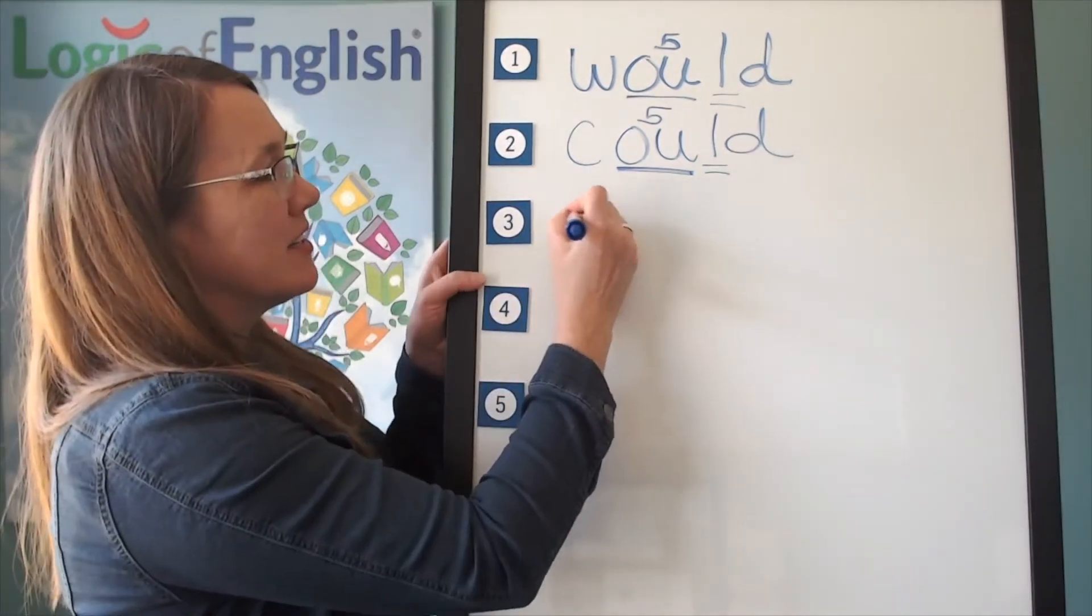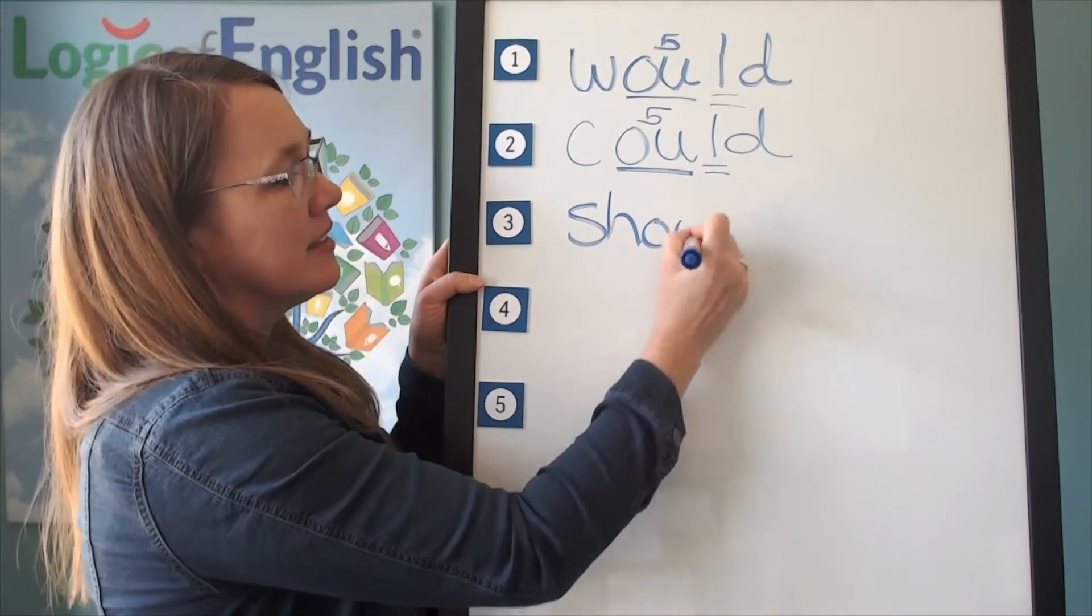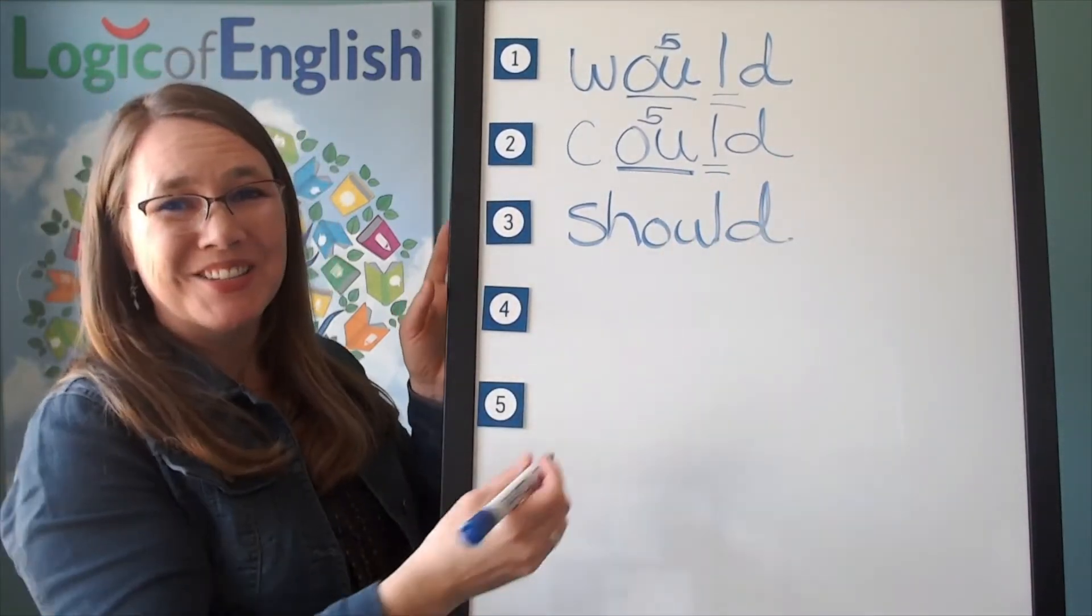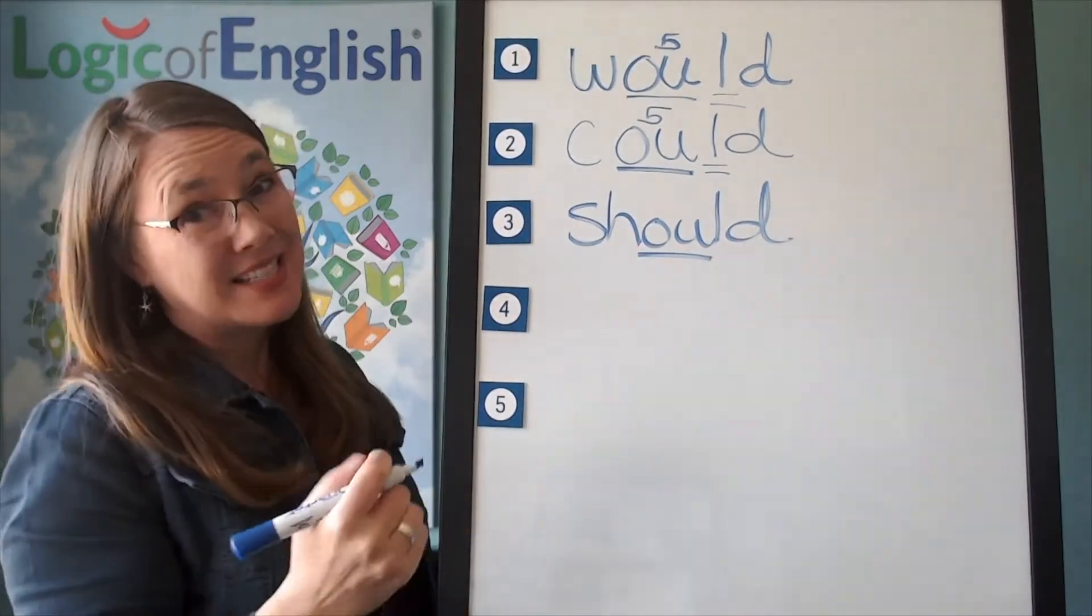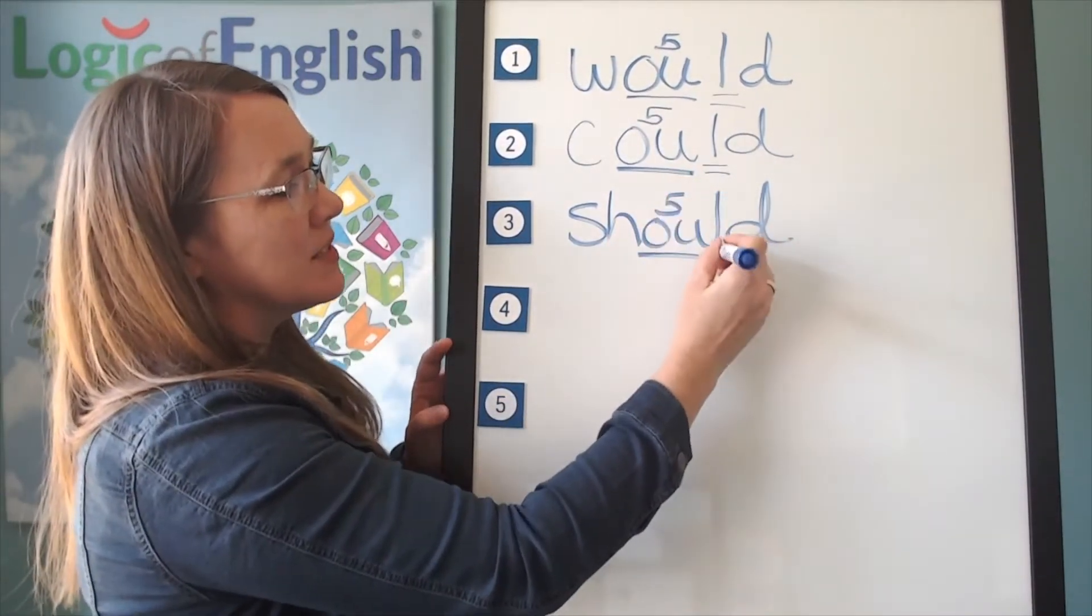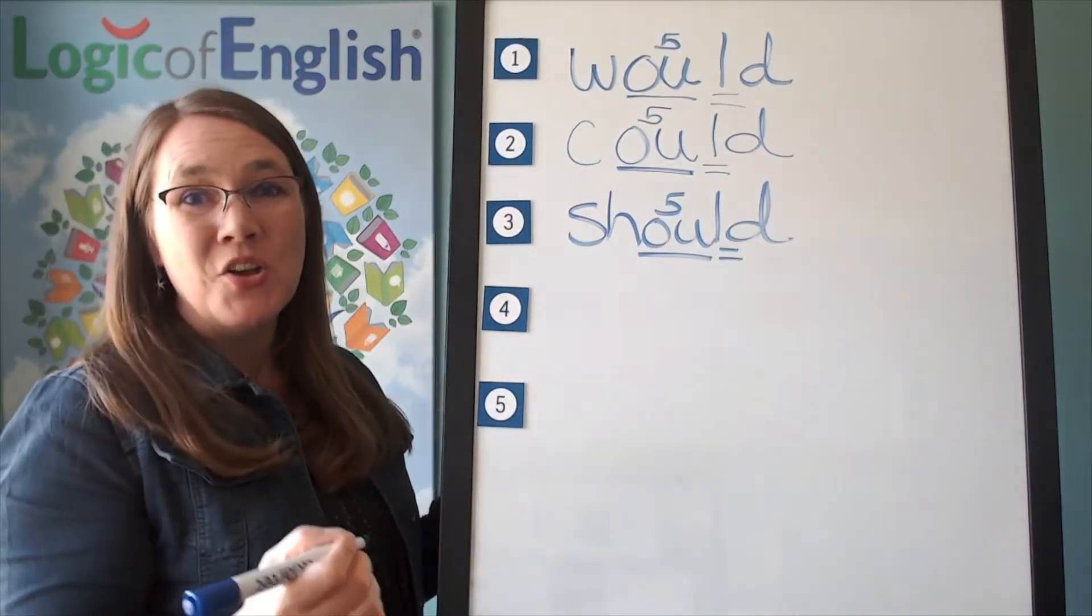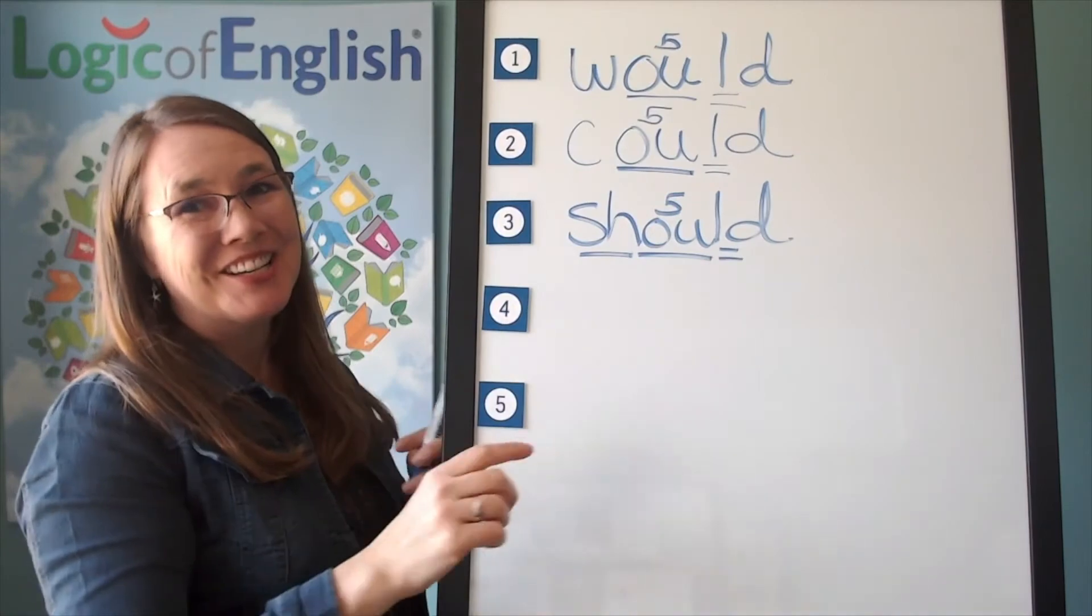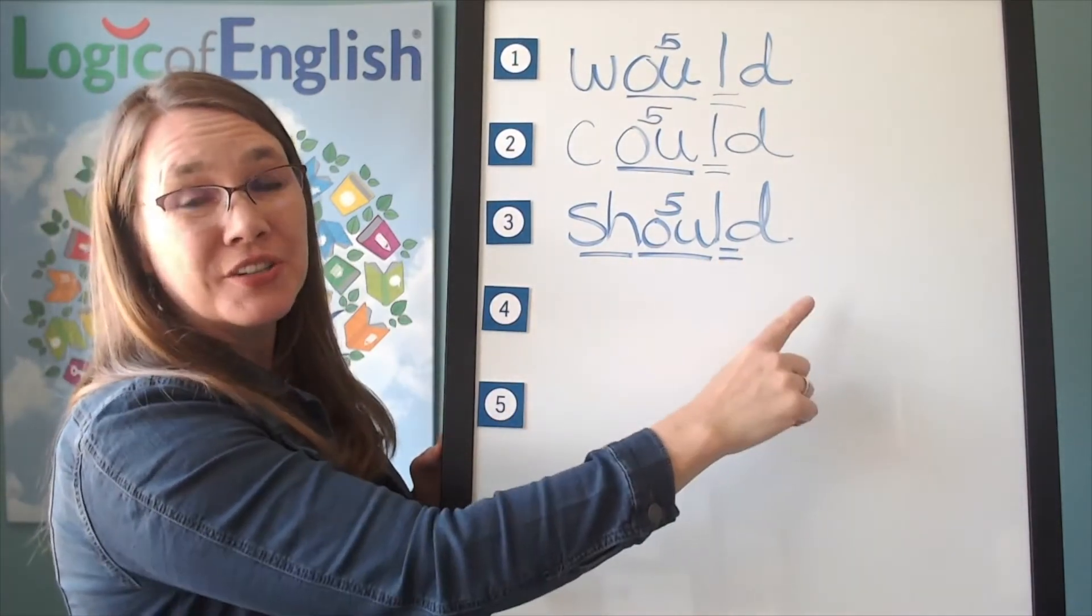Good job. Now help me write it. Should. Sh. Uh. Silent L. Duh. How will we mark it? Well, underline the uh. What sound of ow, o, oo, uh, uh is it? Fifth. Well, double underline the silent L. You're right. I forgot to underline the sh. Good catch. Let's read it. Sh. Uh. Duh. Should.